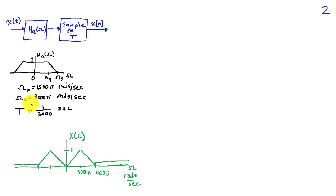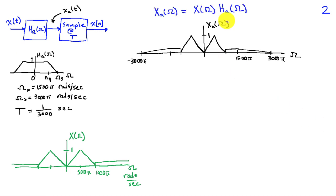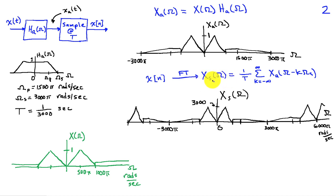Beginning with the sampling operation: we pass the input signal x(Ω) through the low-pass filter and then sample. Passing through the low-pass filter multiplies the input spectrum by the frequency response, giving a linear decrease from ω_p = 1500π to 3000π. When we sample, the Fourier transform of the sampled signal x_s(Ω) is (1/T) times the sum from k = −∞ to ∞ of x_a(Ω − kΩ_s), shifting x_a(Ω) by multiples of ω_s. Since T = 1/3000, ω_s = 6000π radians per second.